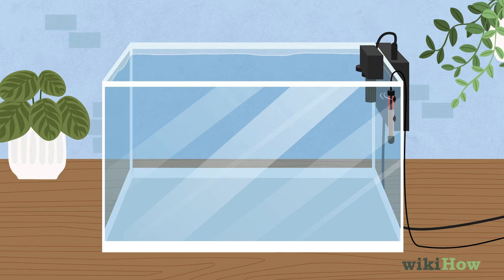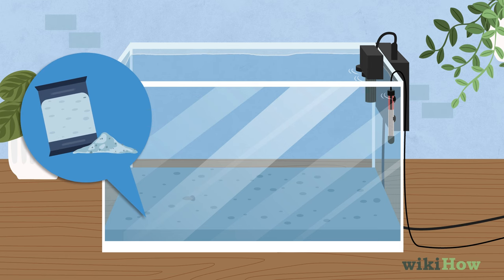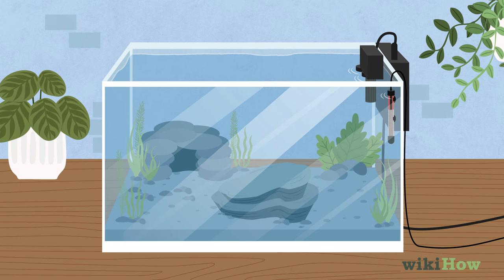Add a filter and aerator if your tank doesn't already have them built in. Then add a shallow layer of substrate, such as sand or gravel, and put in rocks, plants, and other natural elements where your crayfish can play or hide.